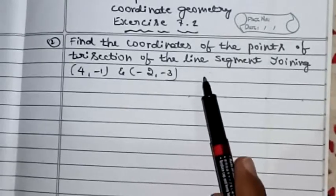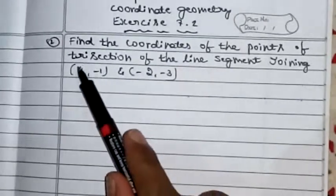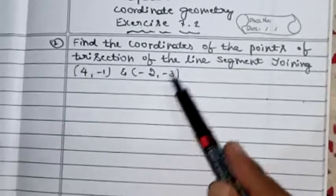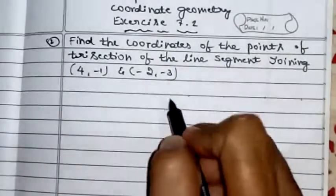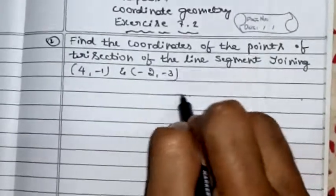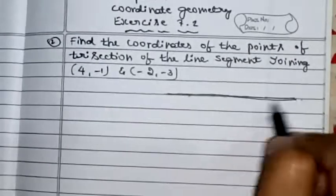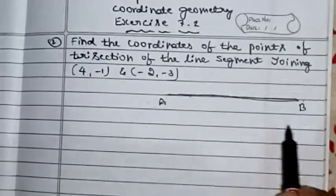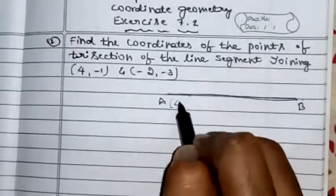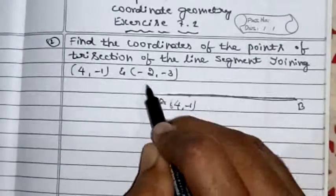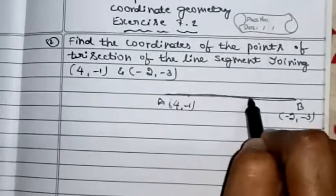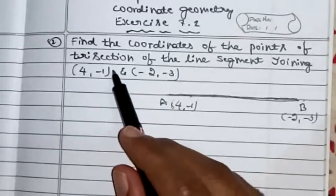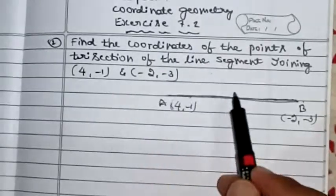The meaning of the question is that the line segment joining these two points is divided by trisection — that is, it is divided into three equal parts. You need to find the coordinates of those points. What is the meaning of trisection? It means the segment has been divided into three equal parts.